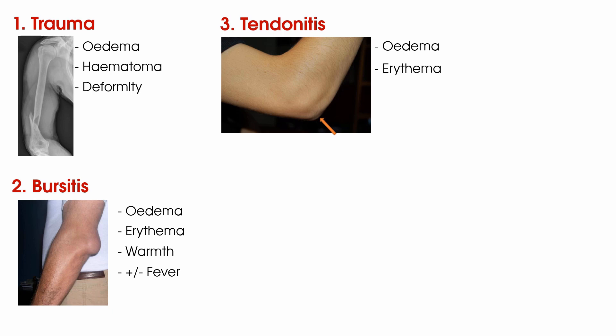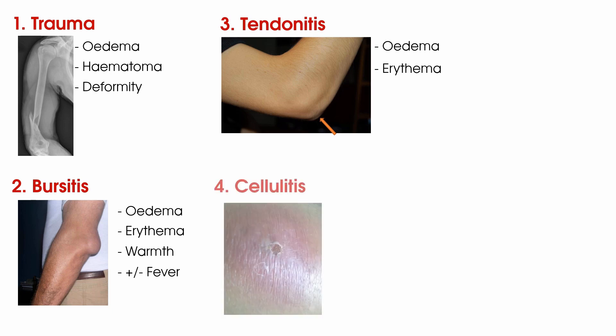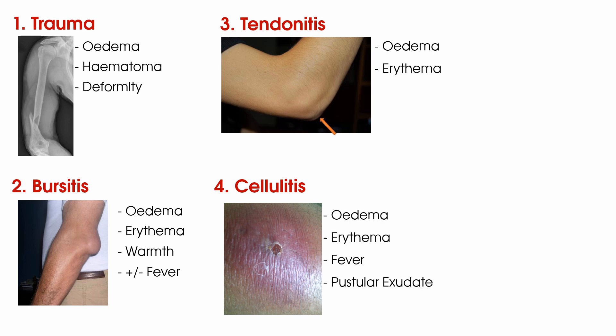Number four is an infection or cellulitis, where you may find redness or swelling, or in progressed cases even pus in the area of infection. Furthermore, look at your patient as a whole — do they feel unwell or do they have a temperature?